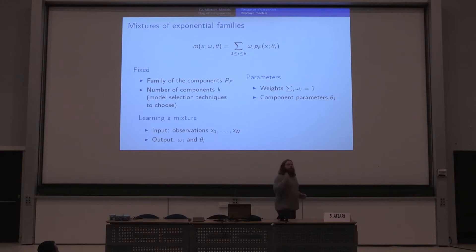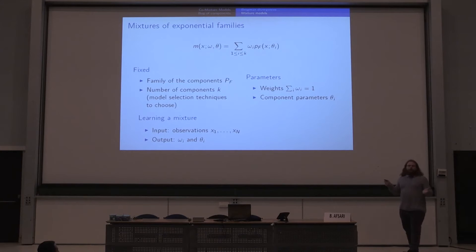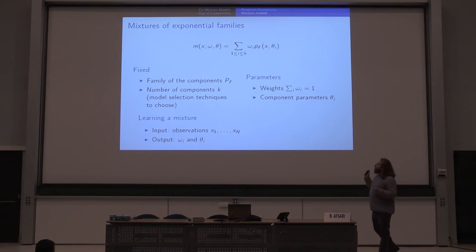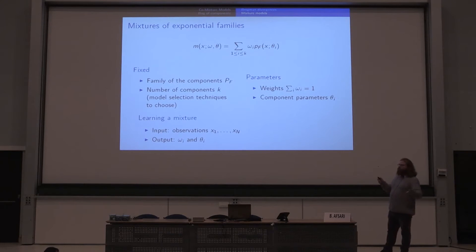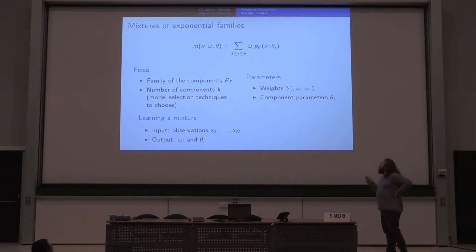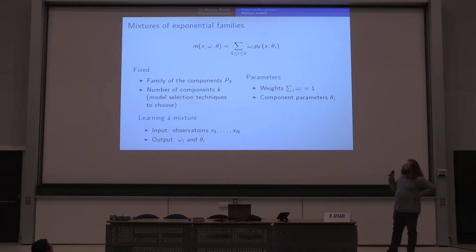I am working on mixture models of exponential families. A mixture model is a weighted sum of distributions, usually of the same type — a mixture of Gaussians, a mixture of Laplace, a mixture of generalized Gaussians. Usually the number of components is fixed, which is my assumption here. The goal of an algorithm to learn a mixture model is to estimate the weights of the sum and the parameters of each distribution involved.